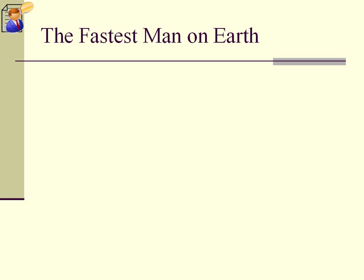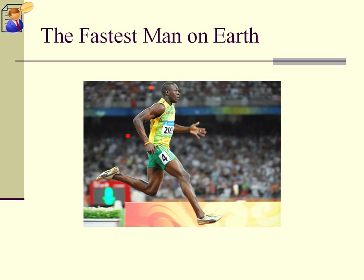Usain Bolt, the fastest man on earth. Usain broke the world's record in the 100-meter dash, with a time of 9.58 seconds. At the 2009 World Championships in Berlin, Bolt's maximum speed in the 100-meter final was 12.27 meters per second, or 44.17 kilometers per hour, that's 27.3 miles an hour.